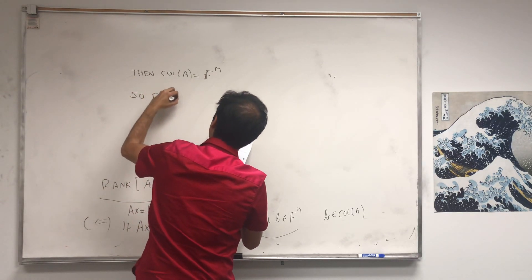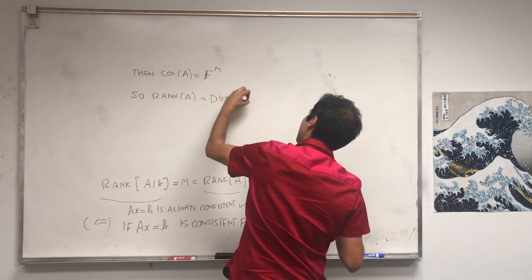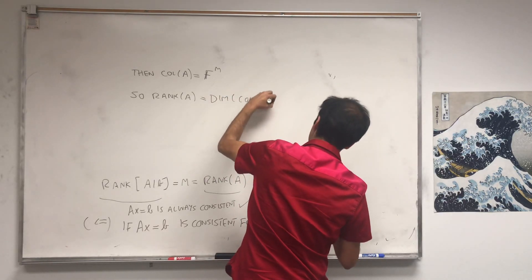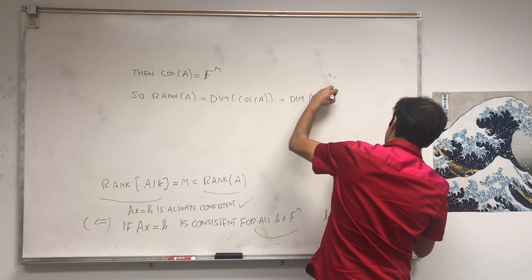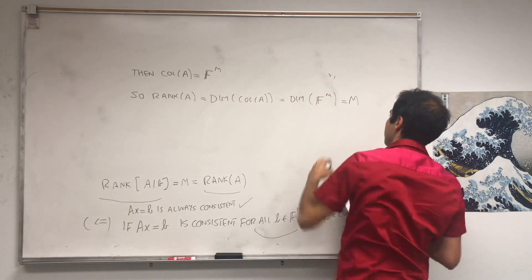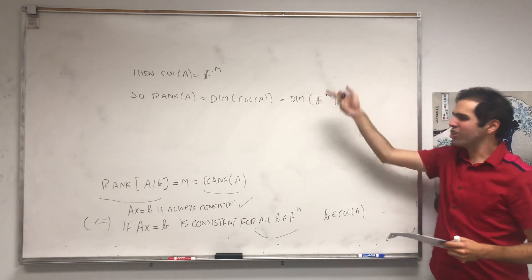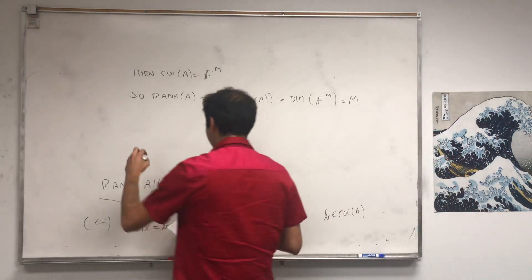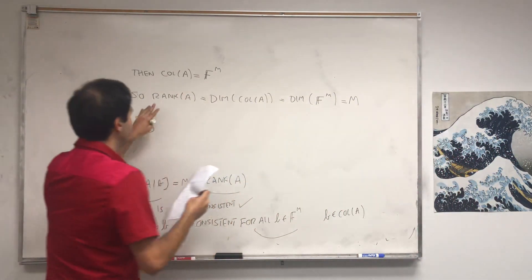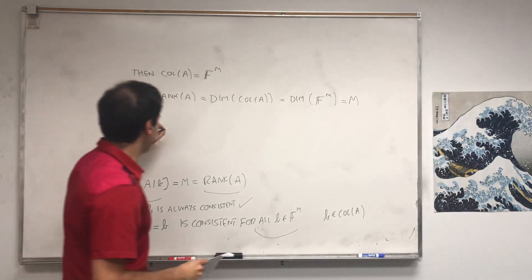So the rank of A, which I have to remind you, is the dimension of the column space of A. That's the dimension of F^m, and that's M. And in particular, what do we have to show? We have to show that A has a pivot in every row, but look, what that means is, if the rank of A is M, it means that the number of pivots of A...